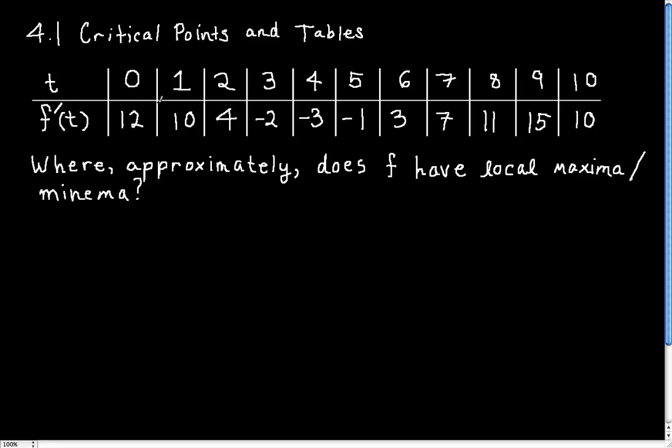Remember the derivative is positive if and only if f is increasing. So what I'll write here is that in between here and here, corresponding to this area on the table, f is increasing. I'll denote that with that arrow.